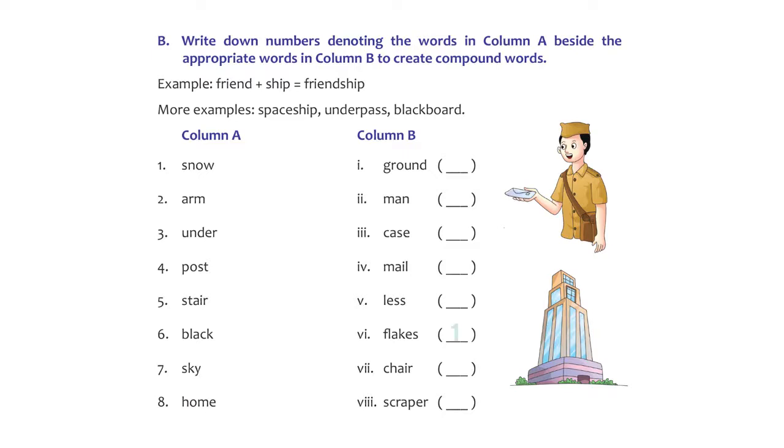Second one, arm. Arm combined with chair gives you armchair. It's a sensible compound word. Third one, under. Let's match under with ground to form underground. Fourth, post. Post and man, postman. Fifth, stair. Stair and case, staircase.